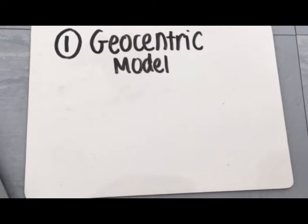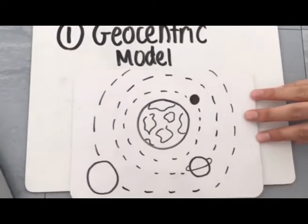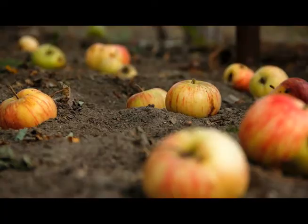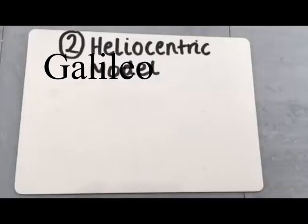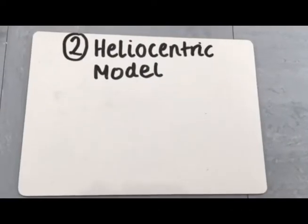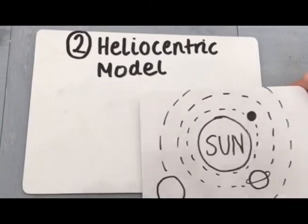The first model was the geocentric model, which explained how all planets orbit the Earth. Scientists including Copernicus, Isaac Newton and Galileo helped convince authorities of a new model, defined as the heliocentric model. This astronomical model outlines that all eight planets of the solar system revolve around the Sun.